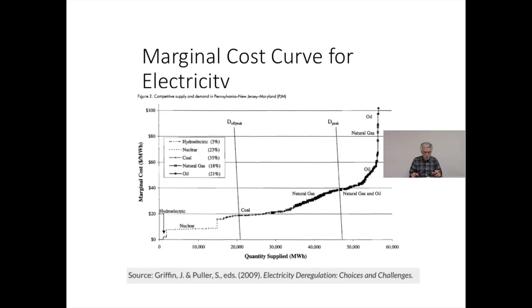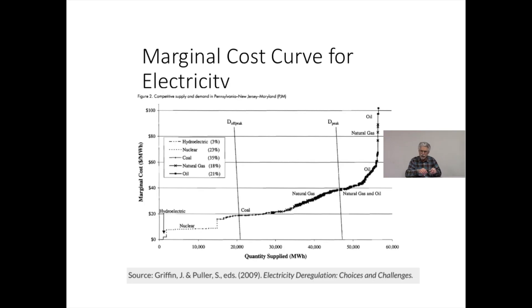Let's look at a marginal cost curve for a real set of generators. The picture we have here is the marginal cost of various resources available in the PJM region of the U.S. PJM is a regional transmission organization in the U.S., and PJM accepts bids for power supply according to the generators in the member utilities. All of the generators available at this particular time are shown in order of increasing marginal cost.